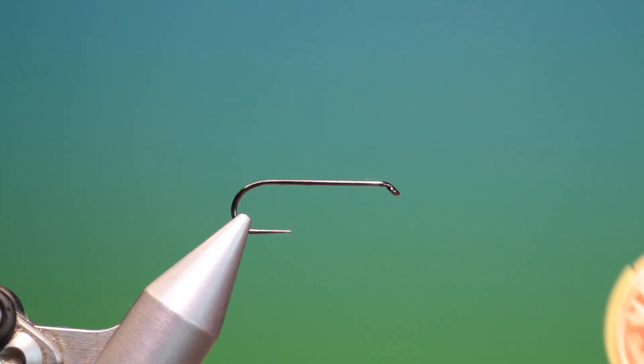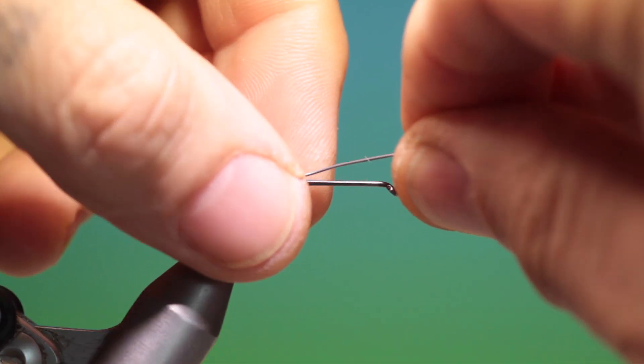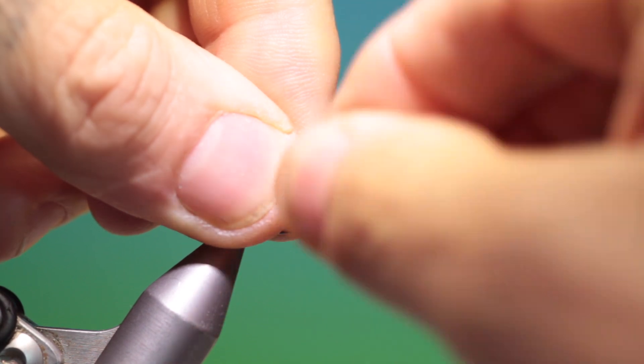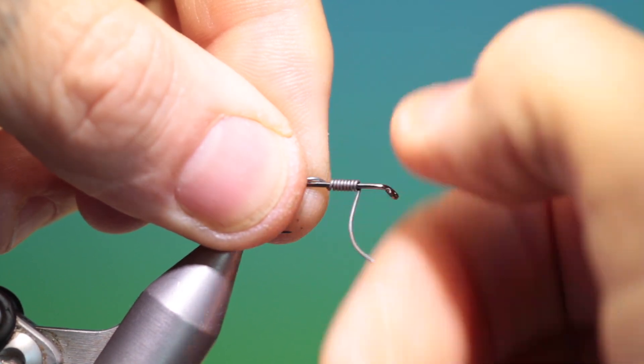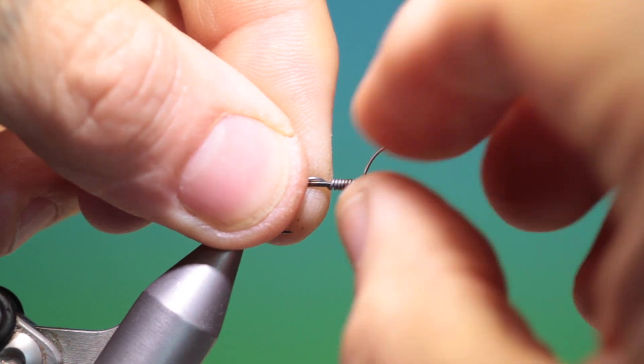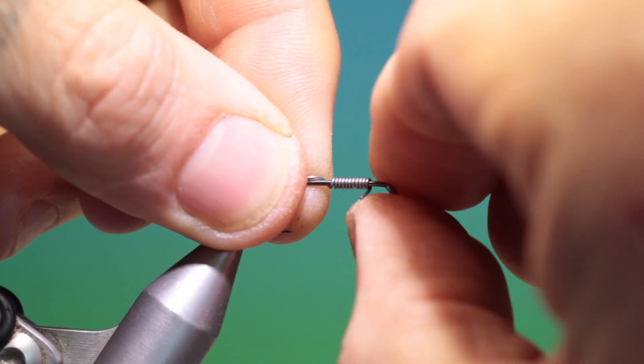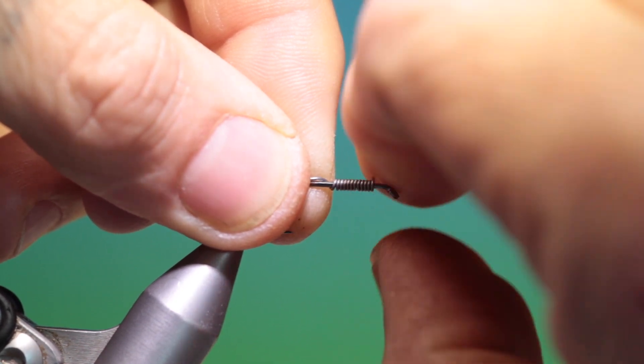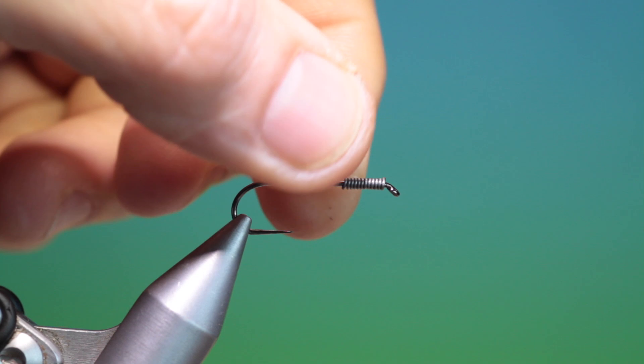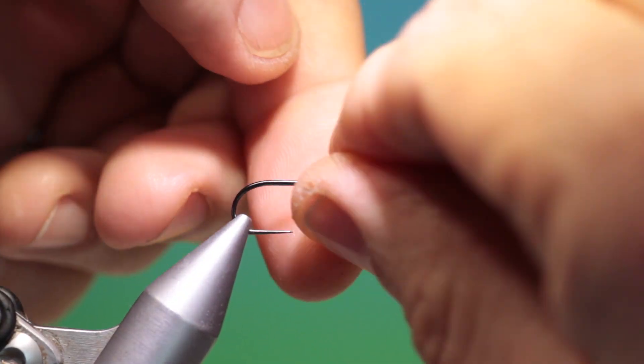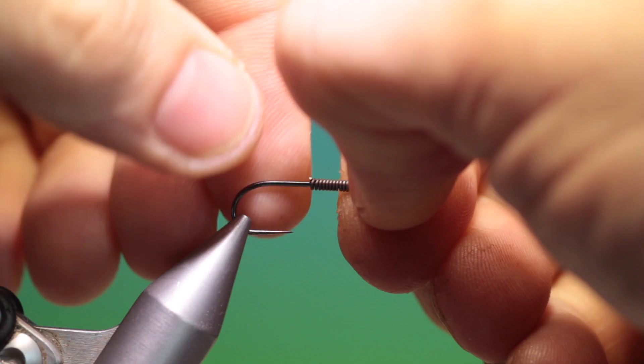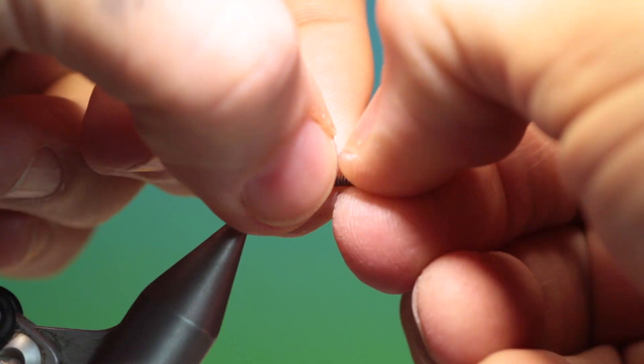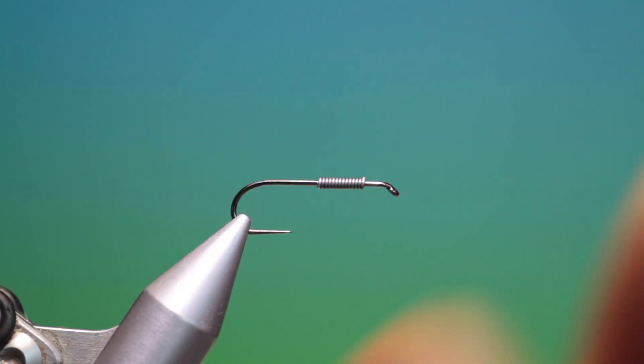We need a little length of lead wire, so we hold this just on top of the hook shank and we'll go around in tight close touching turns. You need about 10 or so turns depending on the hook size and how heavy you want the pattern to be. Roll that end around, and we take our thumbnail on both hands and just push these two ends together. We want it a wee ways back from the hook eye so we have room to finish.